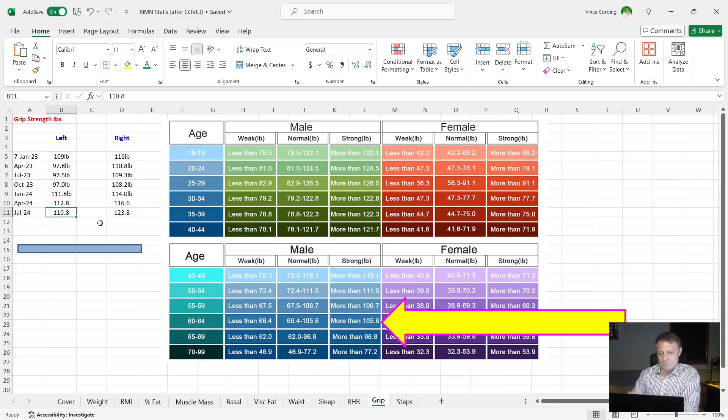So 110 is more than 105 and 123 is certainly more than 105. So if it had another column extra strong, maybe I might be in that which would be good. So I'm quite happy with grip strength because that is a proxy for longevity.